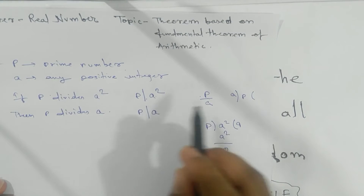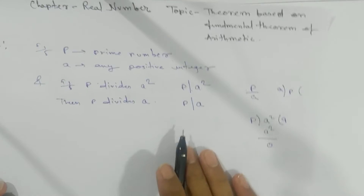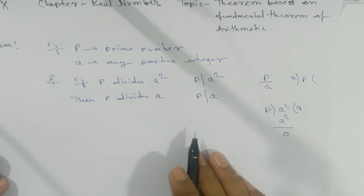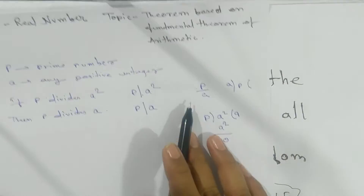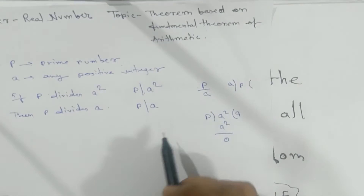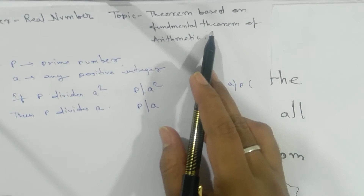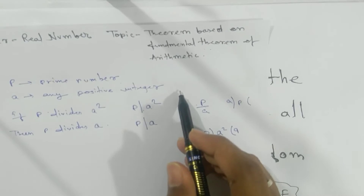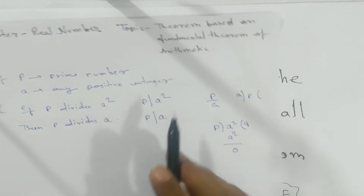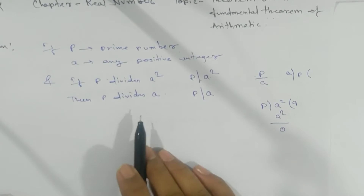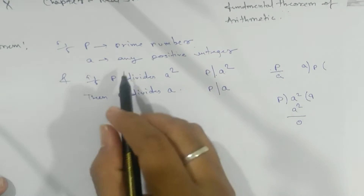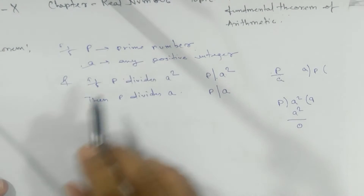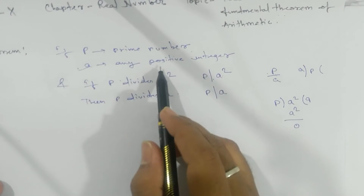Before proceeding, let's recapitulate the Fundamental Theorem of Arithmetic. It says that every composite number can be expressed as a product of primes. Now we will start the proof. We have a as a positive integer.